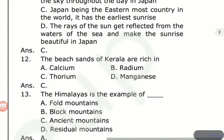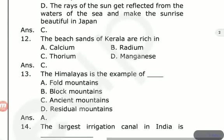The Himalayas is an example of which type of mountain? The options are Fold Mountains, Block Mountains, Ancient Mountains, and Residual Mountains. The answer is Fold Mountains — the Himalayas are called Fold Mountains.